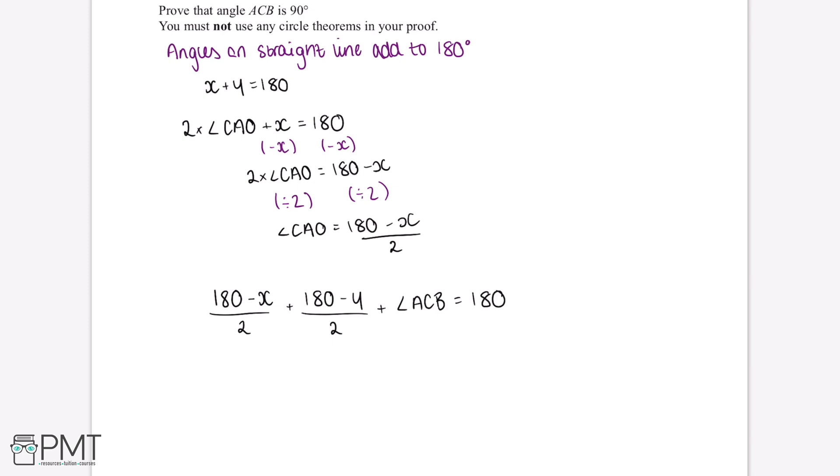The first thing we can do is write this into a different form so that it is easier to rearrange. 180 minus X divided by 2 can be written as 90 minus X over 2. Then 180 minus Y divided by 2 can be rewritten as 90 minus Y over 2.